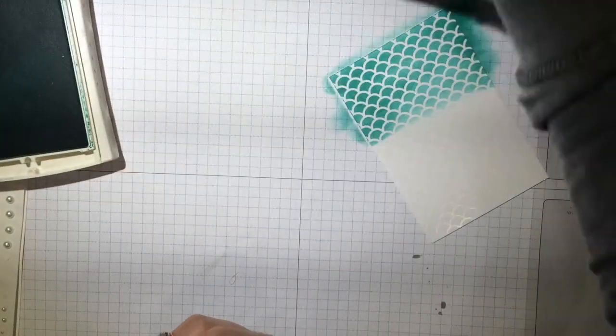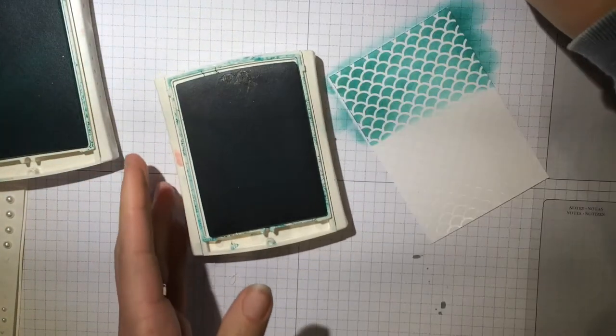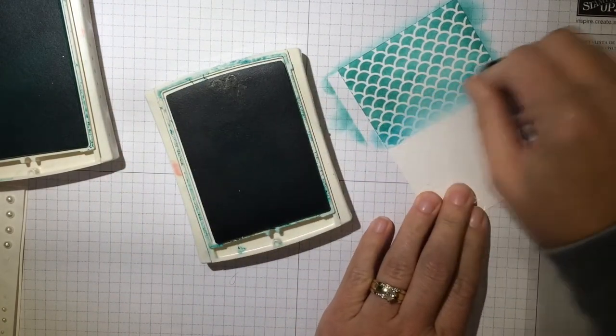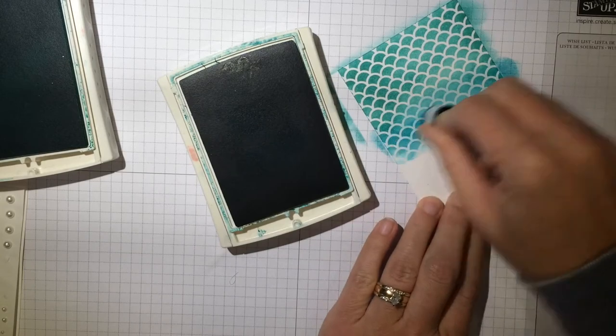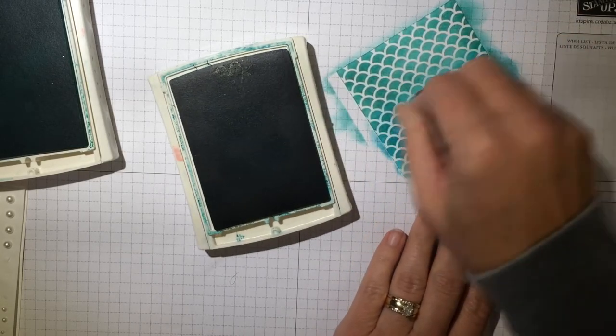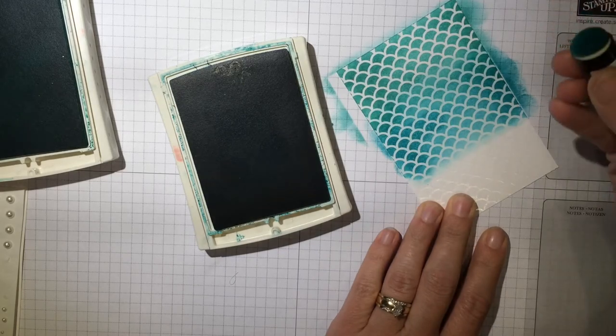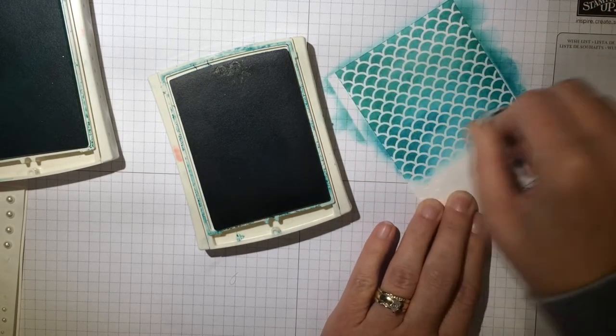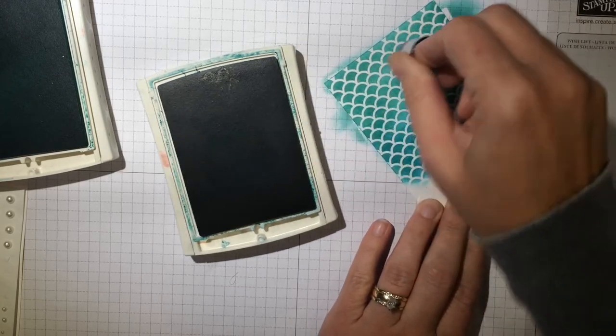Now I'm going to get the Bermuda Bay. Do you see how I did just about a third of it? And now I'm going to go with the Bermuda Bay and just go all the way down and go back over a little bit to blend in. I'm going to take my Coastal Cabana again and just blend in so that it's not a hard line where those two colors meet.